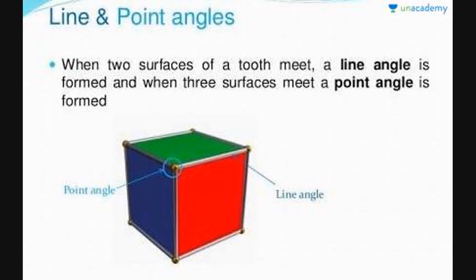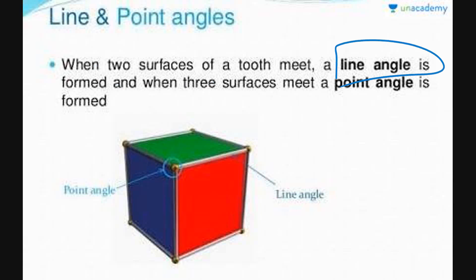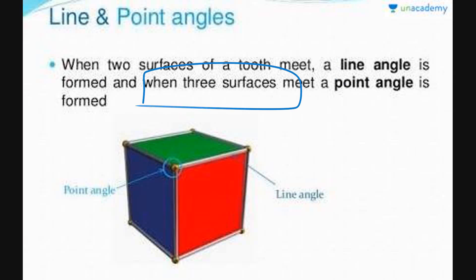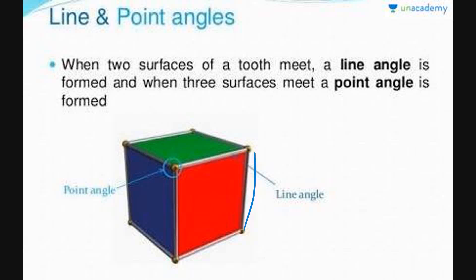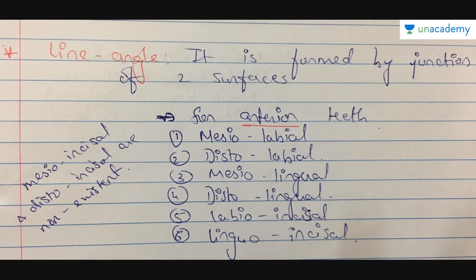Now, what is a line angle and a point angle? The basic difference is: if two surfaces of a tooth meet, it is called a line angle. When two surfaces meet, it forms a line angle. But when three surfaces meet, it forms a point angle. You can see in a cube that when three surfaces meet, that becomes a point angle, and when two surfaces meet, they become a line angle. A line angle is formed by the junction of two surfaces.